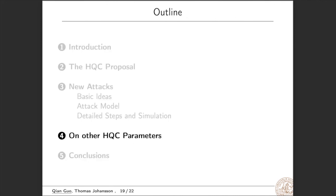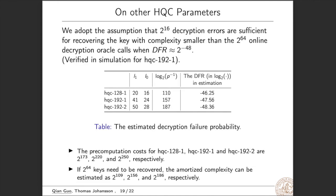Next, we discuss the influence of this attack on other HQC parameters. We adopt the assumption that 2 to 16 decryption errors are sufficient for recovering the key, with complexity smaller than the 2 to 64 online decryption oracle cost when DFR is about 2 to minus 48. This assumption is verified in simulation for HQC 192-1. This table shows the estimated decryption failure probability. We see that the pre-computation costs for HQC 128-1 and HQC 192-1 and HQC 192-2 are these values respectively.